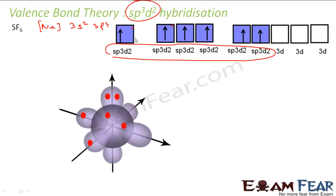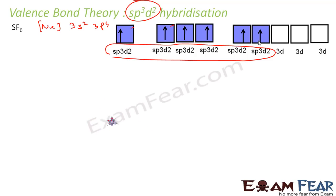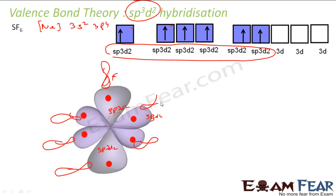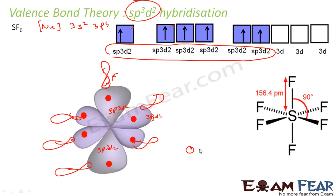Since 6 orbitals are involved, we get 6 SP3D2 hybrid orbitals, all equal in energy and same in shape, each containing one electron. Fluorine atoms, each having one unpaired electron, form bonds with each of these hybrid orbitals. The resulting structure is octahedral. The structure of SF6 can thus be explained using valence bond theory through SP3D2 hybridization.